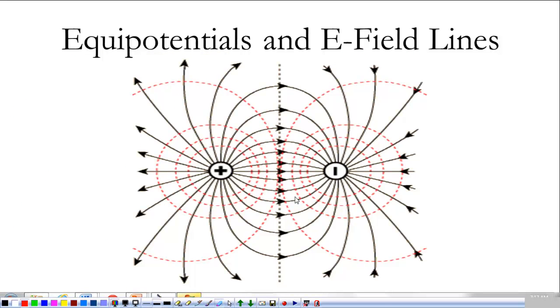So here we have the exact same picture. We have a positive charge, we have a negative charge. And the black lines here are the electric field lines, and the dotted red lines are equipotentials.